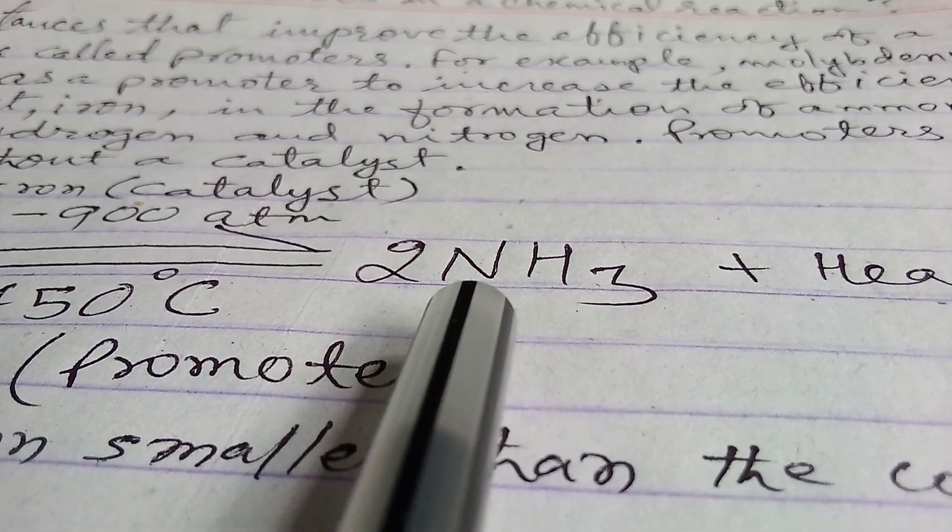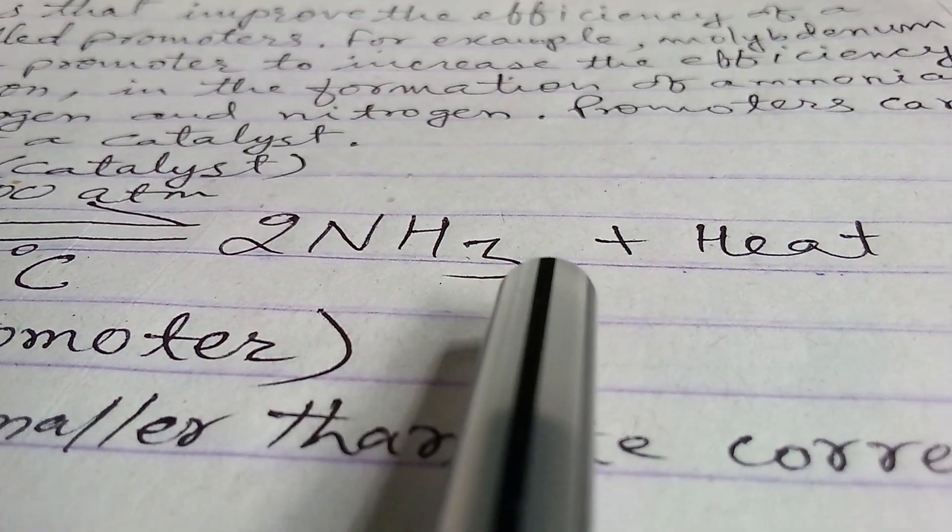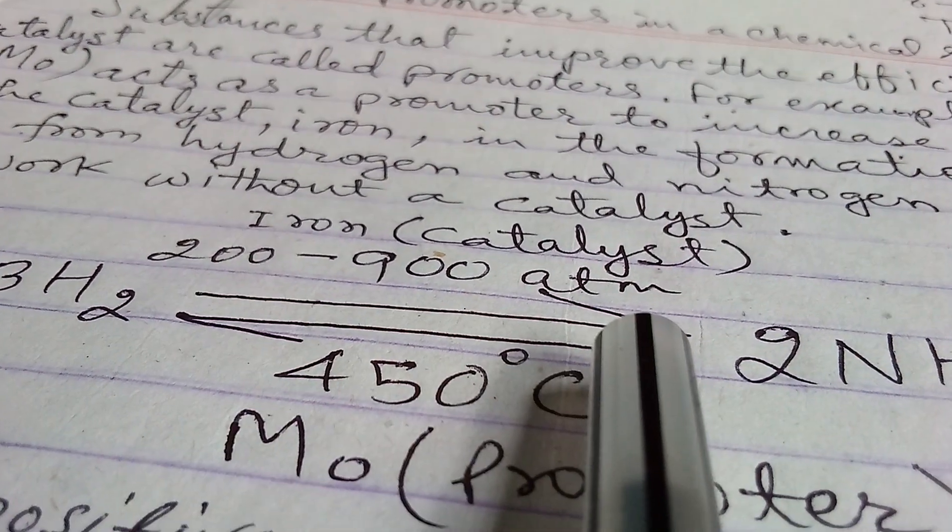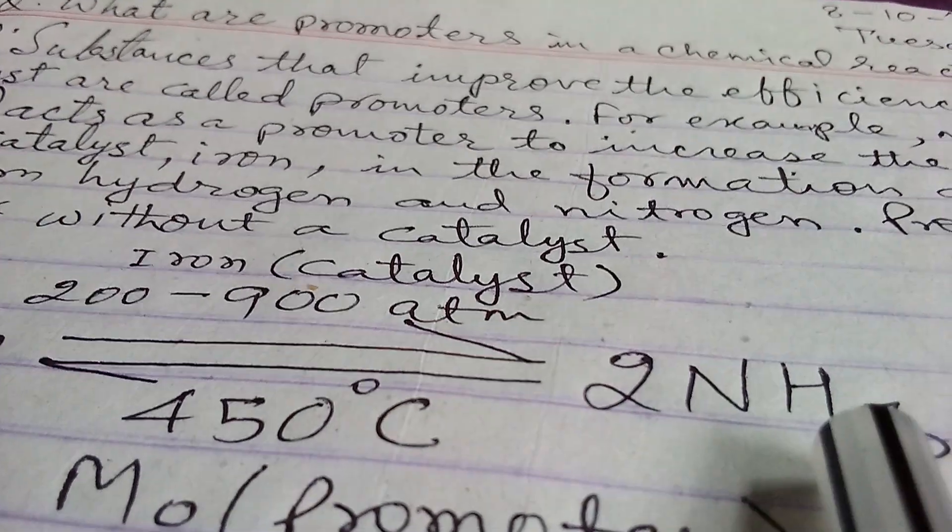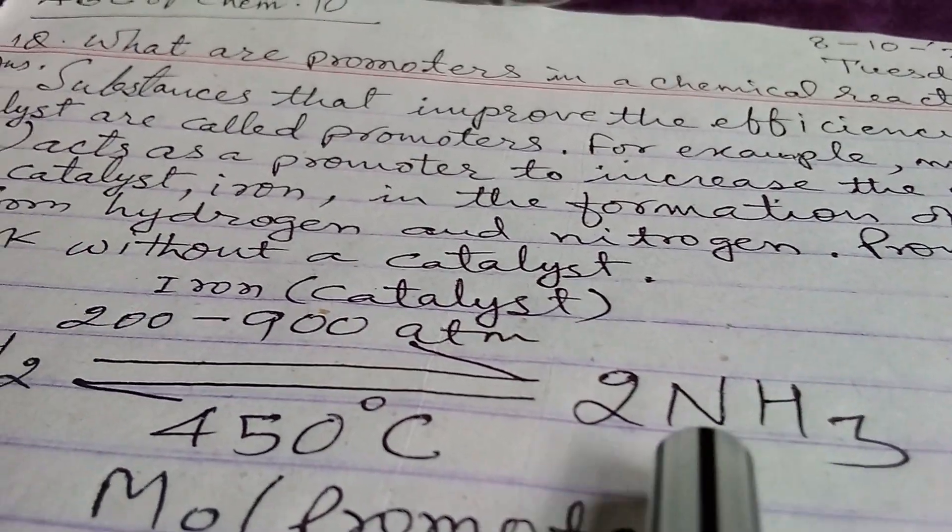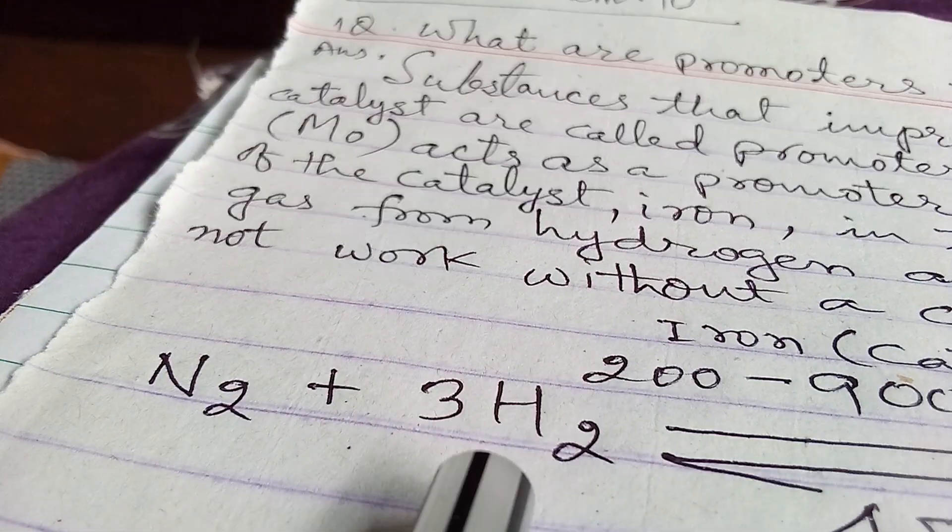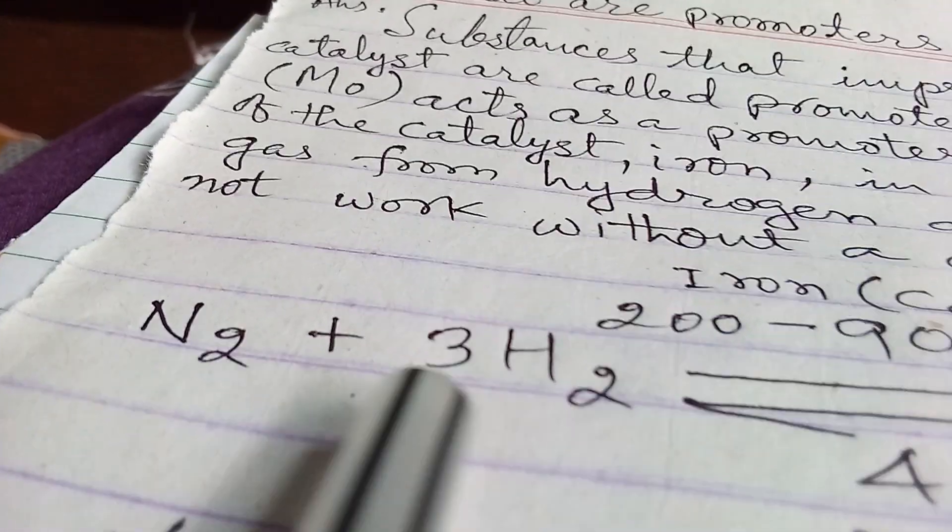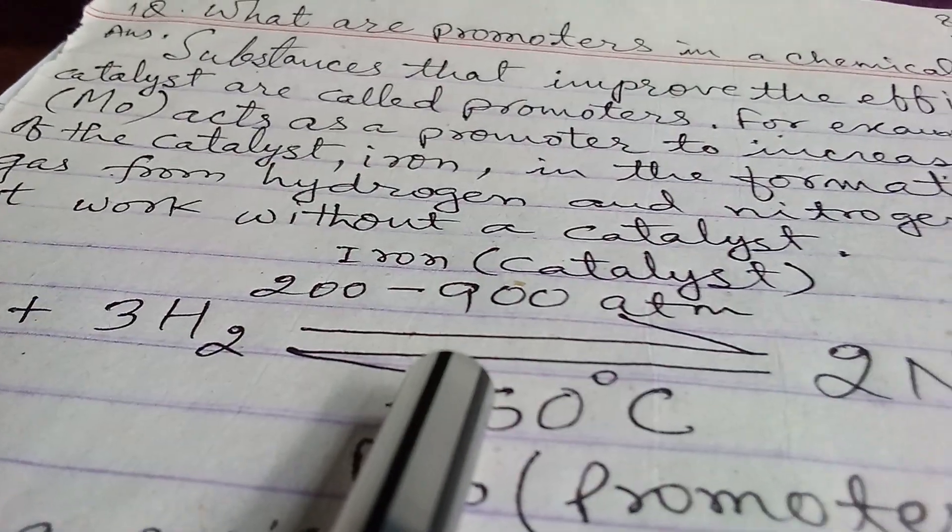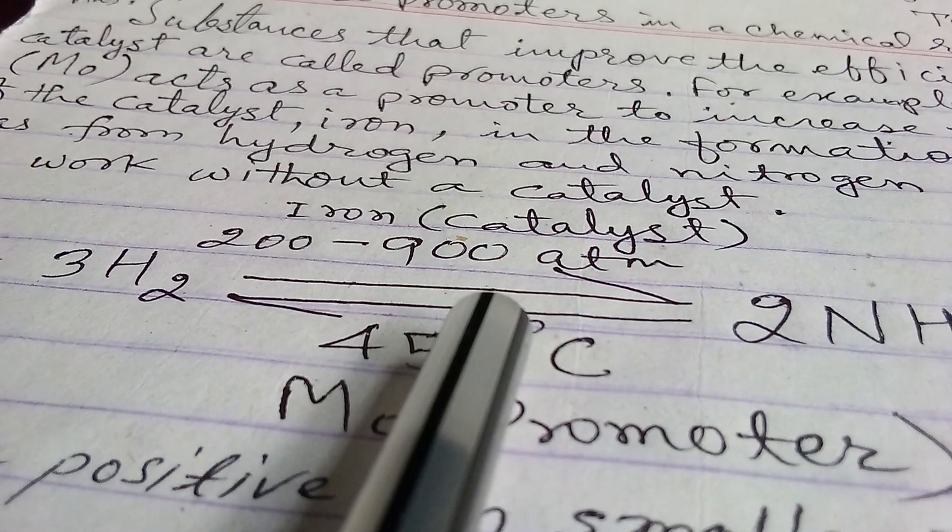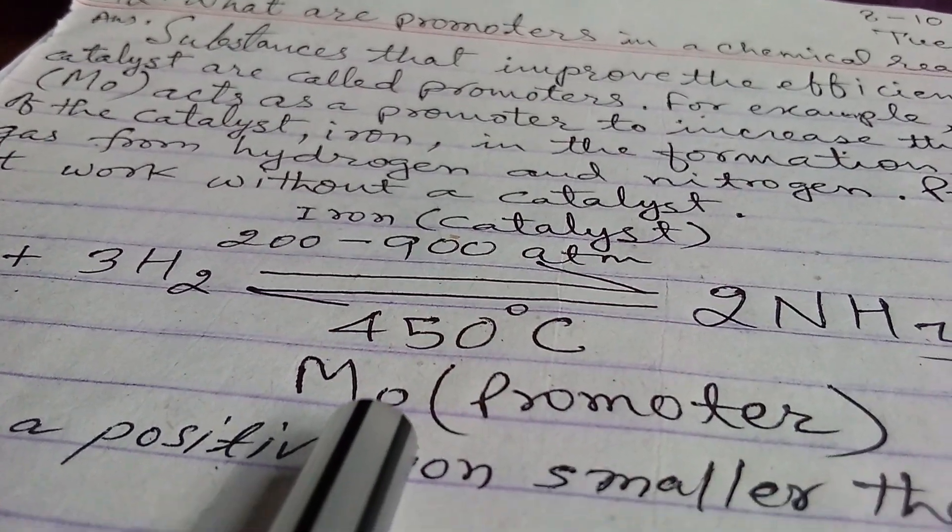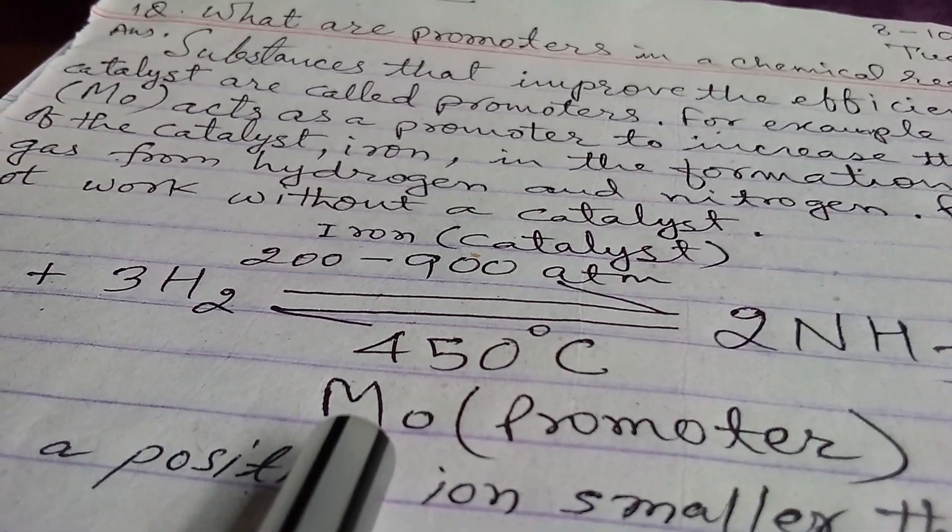two molecules of ammonia and heat is produced and it is a reversible reaction. That means again these two molecules of ammonia gas converts into three molecules of hydrogen gas and one molecule of nitrogen gas. So this reversibility sign has been given here and here Mo is acting as promoter. Mo is molybdenum.